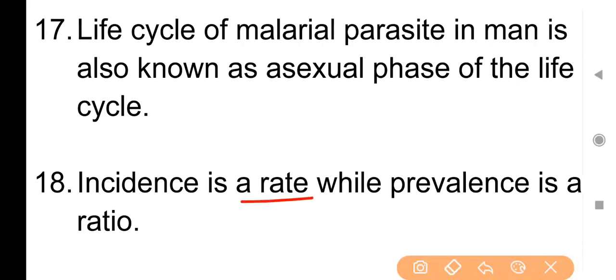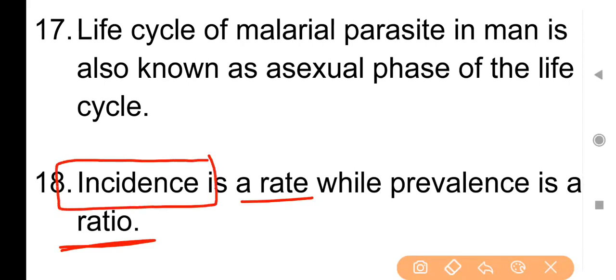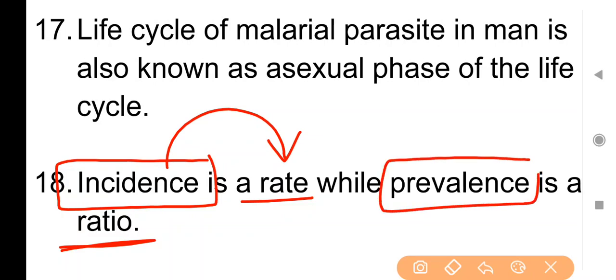Point No. 18: Incidence is a rate while prevalence is a ratio. किसी भी जगह पर diseases के नए cases incidence कहलाते हैं और इसे rate से denote करते हैं — incidence को हमेशा rate द्वारा बताया जाता है। Prevalence का मतलब है किसी भी जगह पर मौजूद disease के old और new cases दोनों, और इसे ratio के रूप में बताते हैं।